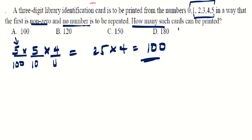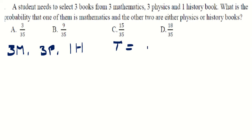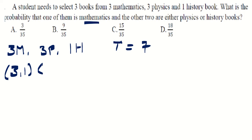The next question: a student needs to select three books from three mathematics, three physics, and one history book — seven books total. What is the probability that one of them is a mathematics book and the other two are either physics or history? One mathematics means C(3,1), and the other two can be one physics and one history — C(3,1) × C(1,1).